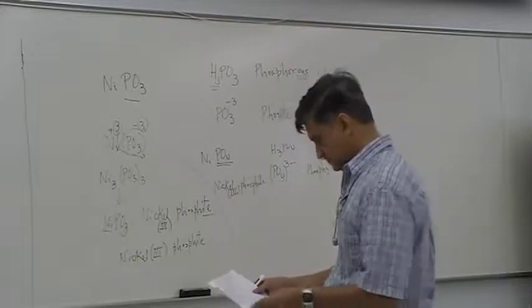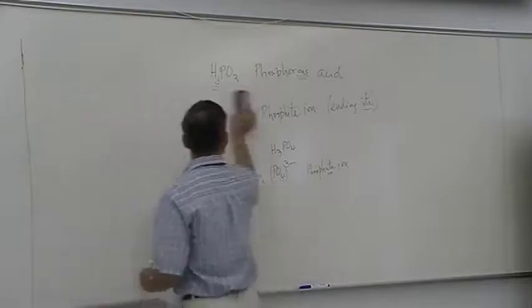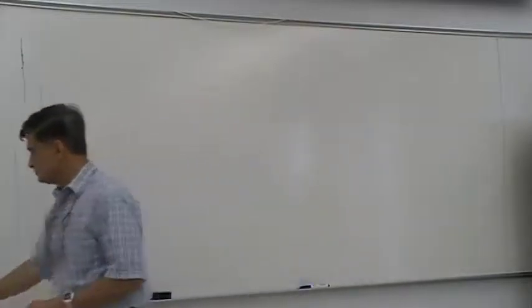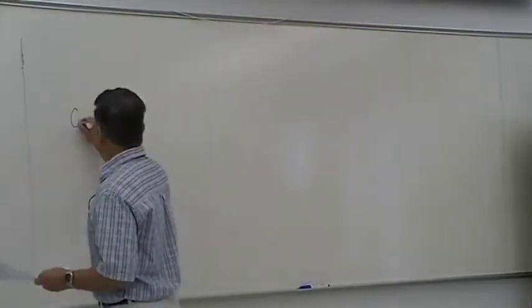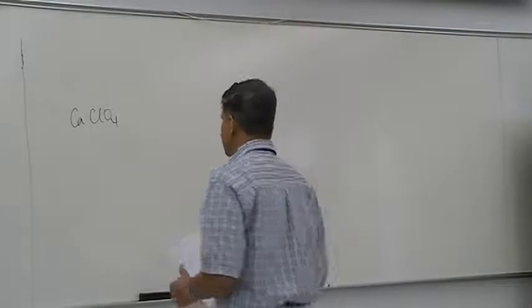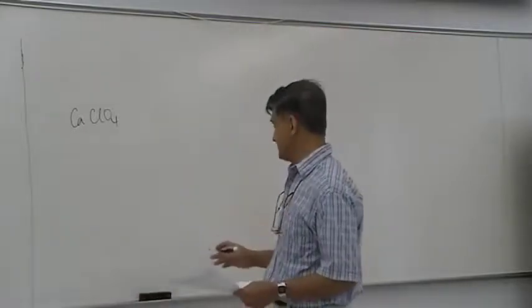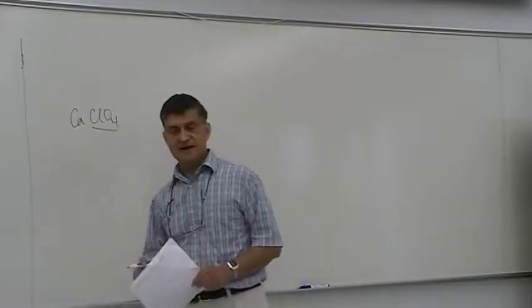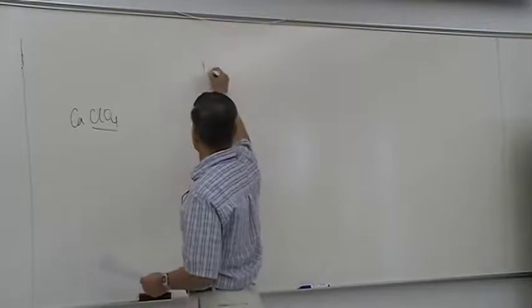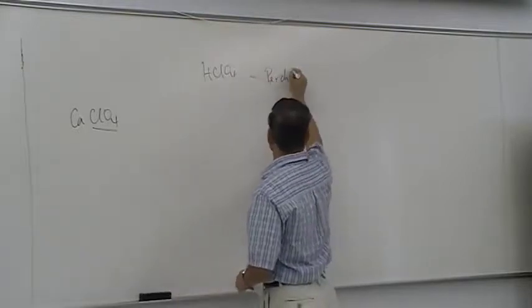Now I'm going to give you another example. CaClO4. Is this the right formula or wrong formula? If it's the right formula, then write down the name of this compound. If it's the wrong formula, then first fix the formula and then write down the name. Again, look at the end part of this compound, ClO4. Think about an acid that has ClO4.